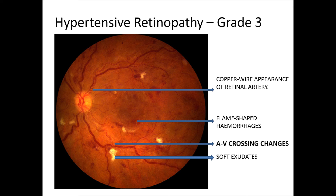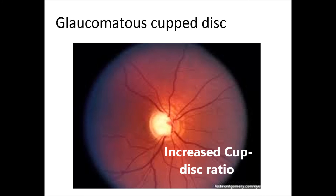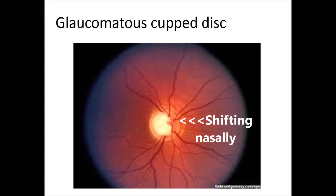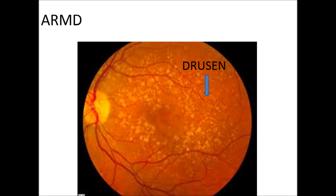The retinal arteries will show attenuation of the blood column and broadening of the light reflex from the surface of the arteries. The disc reflex may appear copper or silver coloured in prolonged advanced hypertension. Optic discs may show papilledema in grade 4 hypertension. In glaucoma, the cup-disc ratio is increased and the retinal vessels are shifted nasally as they arise from the disc.